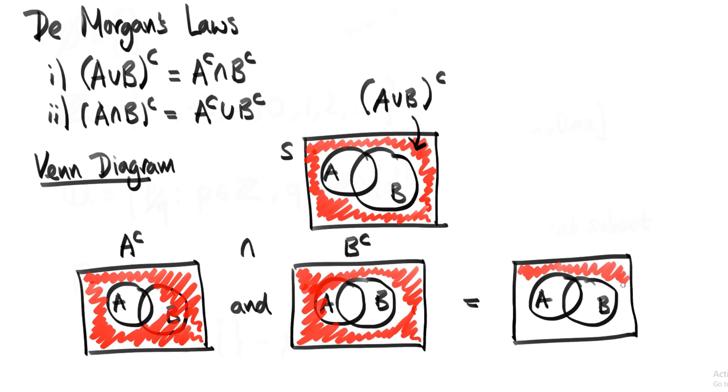As you can see, this red shaded area is exactly the same as the red shaded area we have for A union B complement. So that's pretty convincing. But it doesn't constitute a proof.